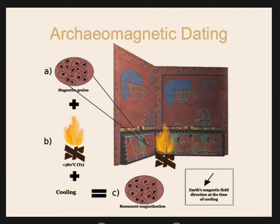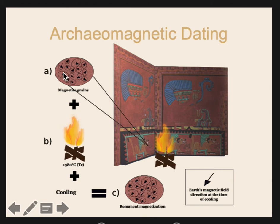A similar technique that could be used on similar materials is archaeomagnetic dating. Archaeomagnetic dating has to be used on something fixed in the ground that's also made of clay. The way it works is: when you have a hearth made of clay, there are going to be iron particles in the clay. When you apply heat, there's going to be enough flux that those iron particles can realign towards magnetic north.